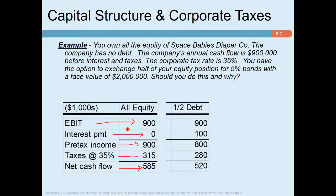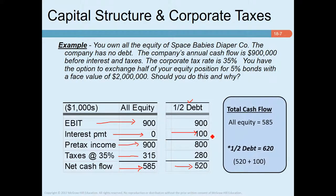If you exchange half your equity for debt at five percent interest, the interest payment is 100,000 and taxes fall to 280,000, giving a net cash flow of 520,000 — versus 585,000 in the all-equity case. However, you've also paid 100,000 in interest to bondholders. Total cash flow generated and paid to all capital providers is 620,000, which is higher than the all-equity case.